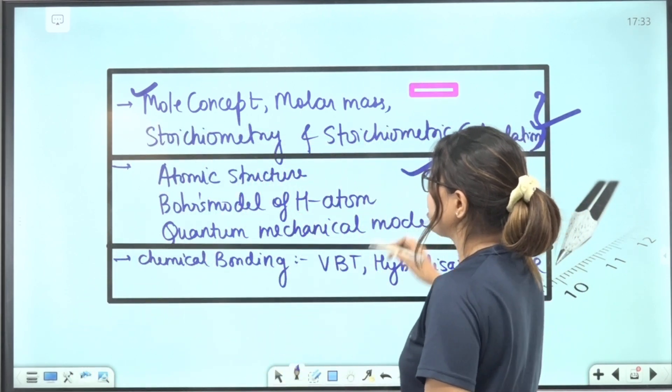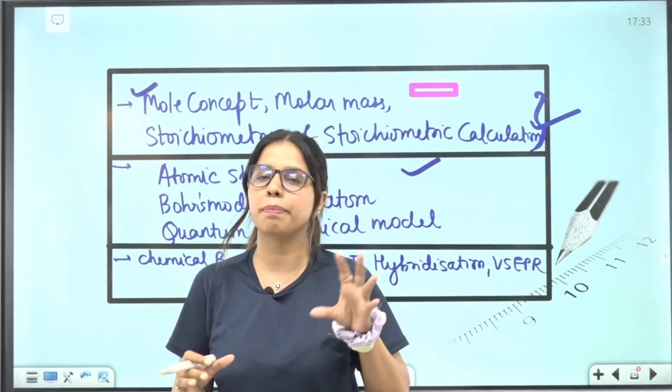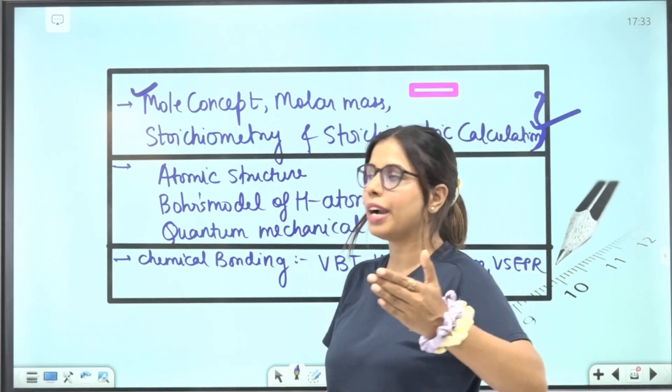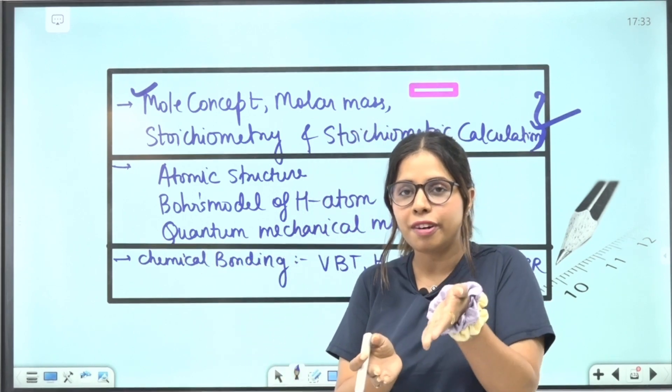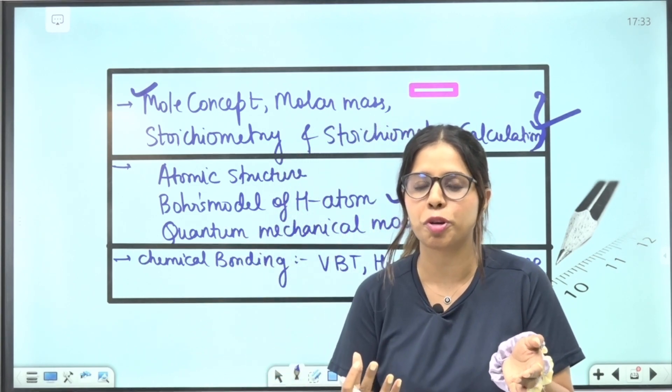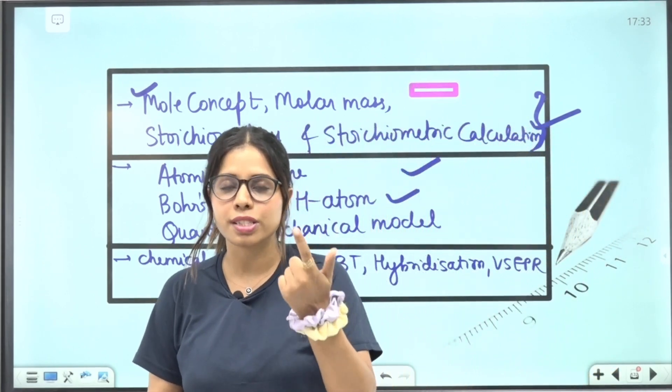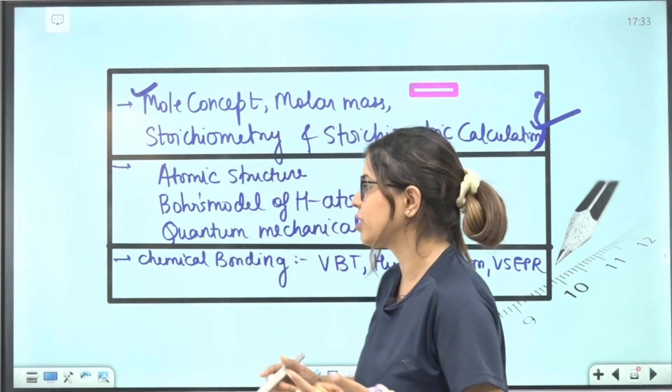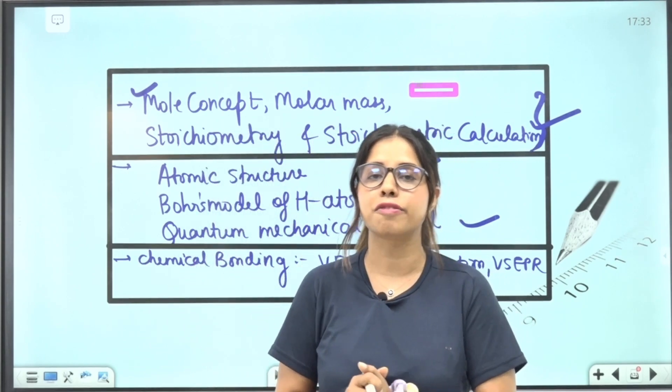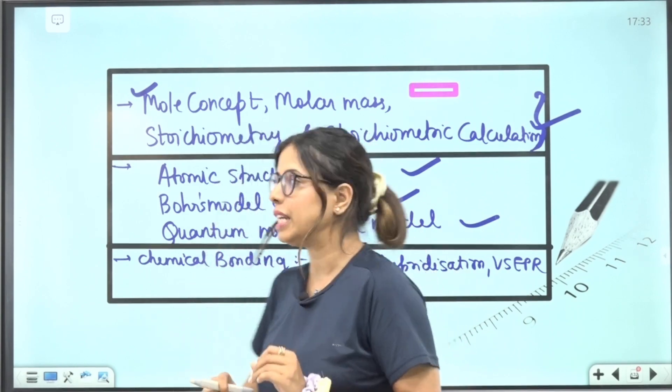Second comes the Atomic Structure chapter, which has a lot of theory, but you don't have to waste time in many places. Start with Bohr's atomic model of hydrogen atom. From there, velocity, frequency, time period, radius—all these formulas you will revise well. Lyman, Balmer, Paschen, Brackett, Pfund—solve the related transition questions. Quantum mechanical model, where you do quantum numbers and electronic configuration very well. With these topics, questions will definitely be 100% in your NEET exam.